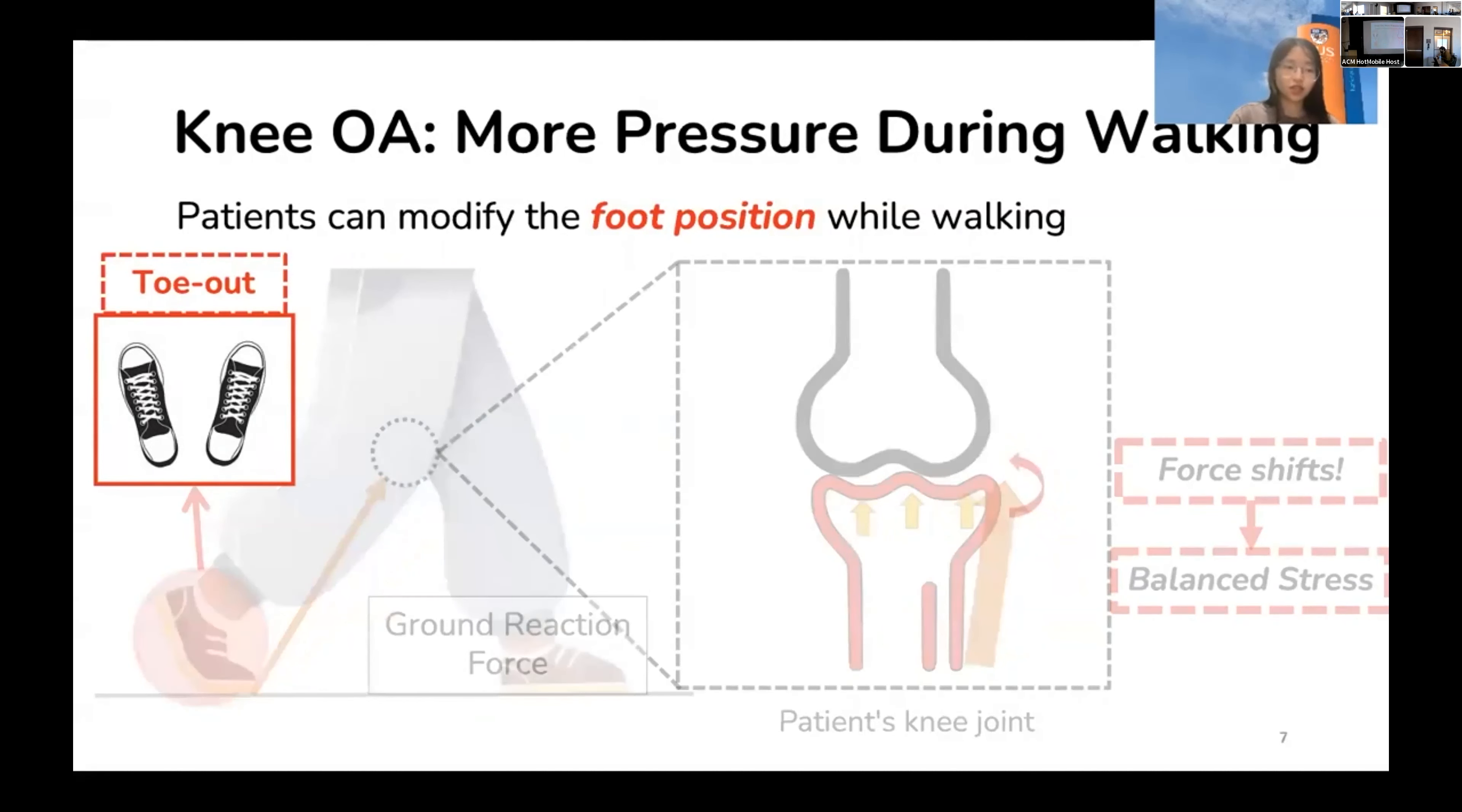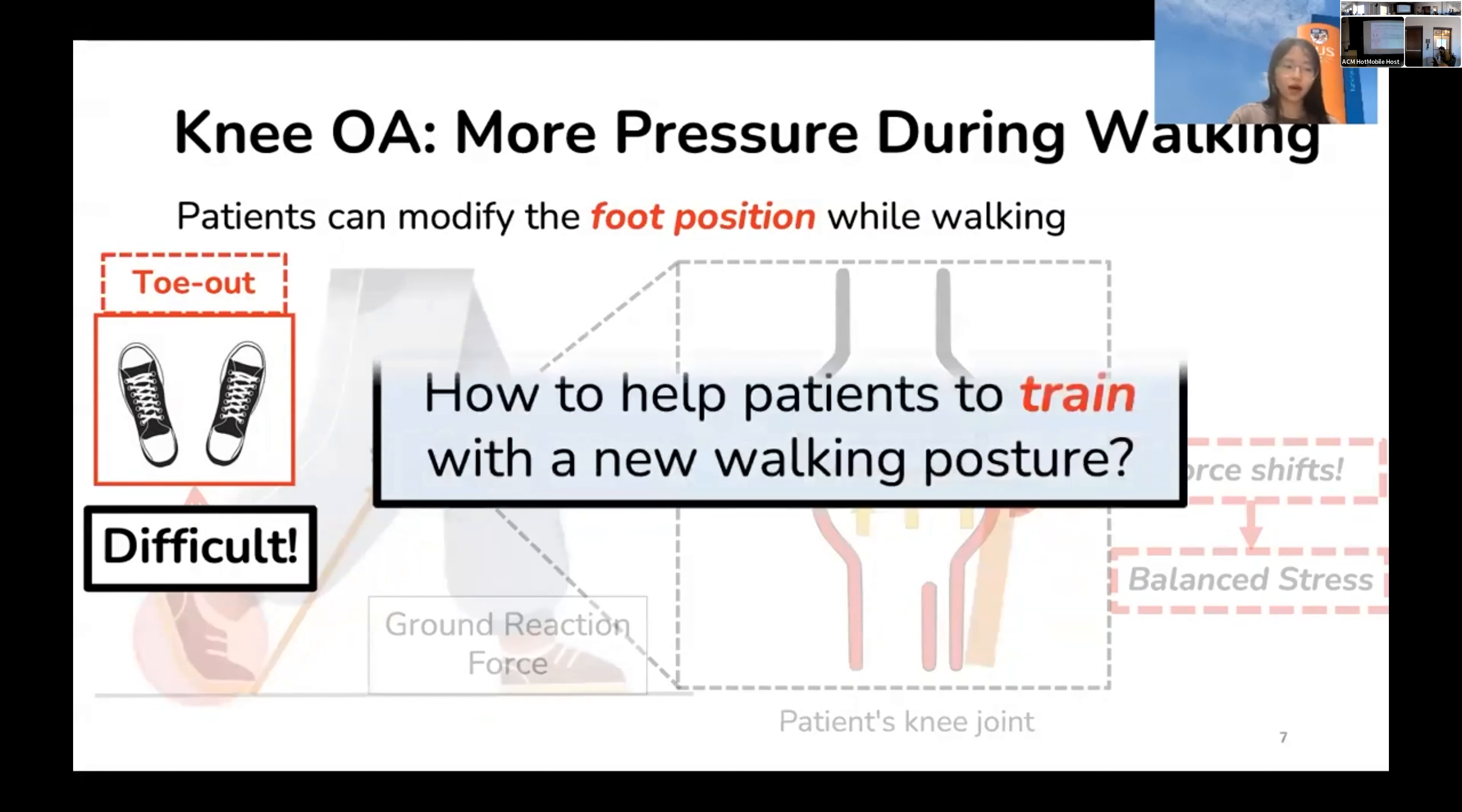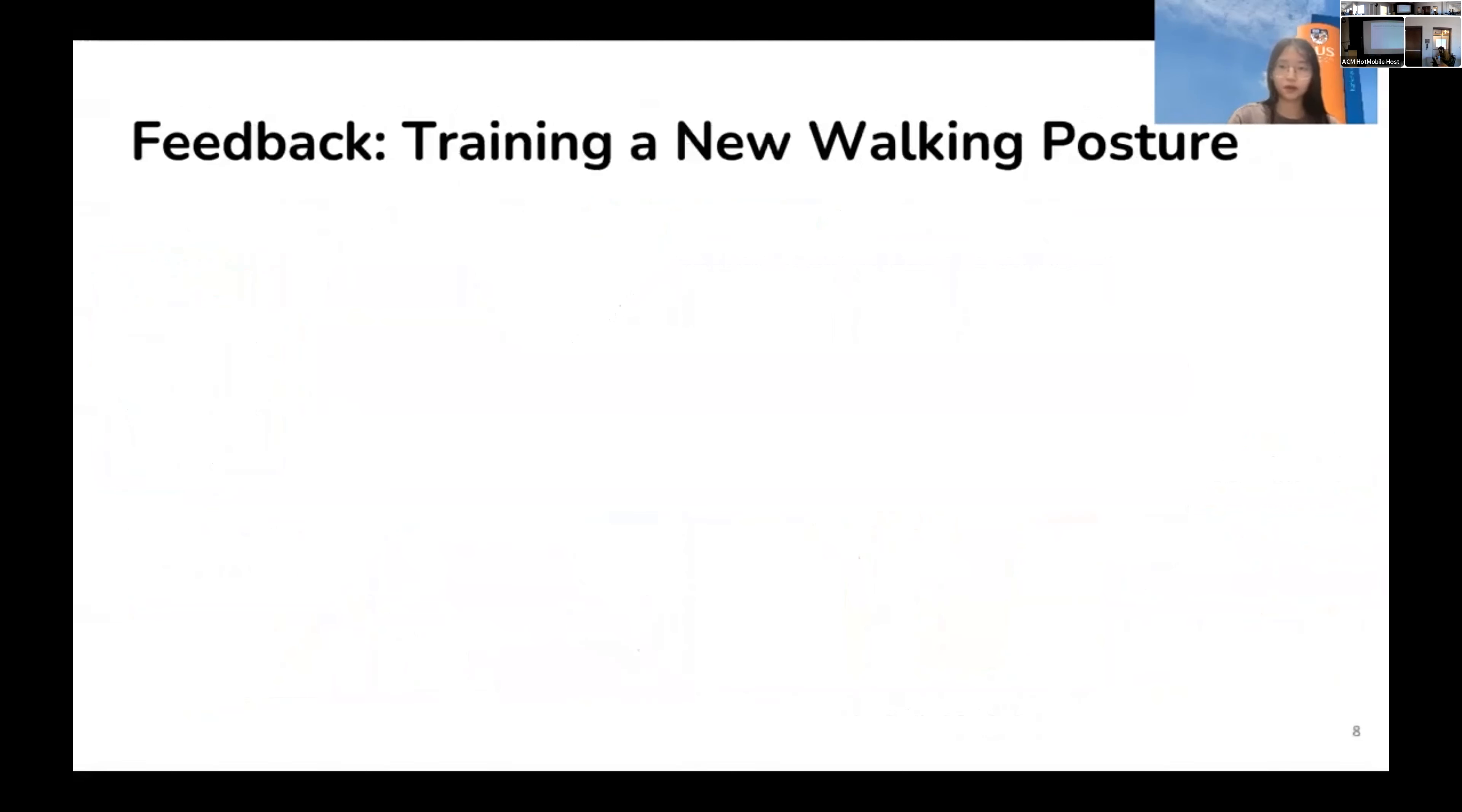However, training people to change their naturally selected walking posture is not easy. How can we help patients with knee OA to train with the new walking posture? Doctors suggest to provide feedback during the training process, and there are mainly two types of feedback systems used in both clinics and academic research.